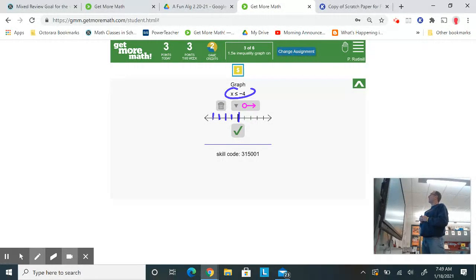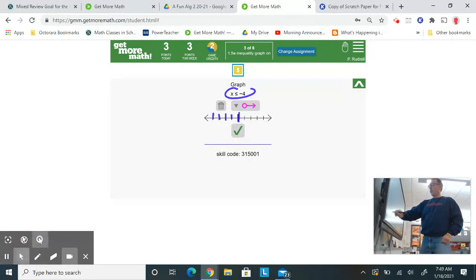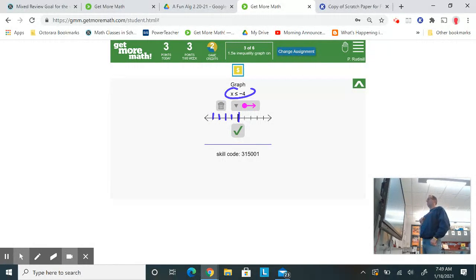And it could be a solid circle because it's less than or equal to. So I'm going to tap on the menu button. I want to make sure it's a solid circle. And I go over to that negative 4, and I tap right on it. And I want everything that is less than or equal.